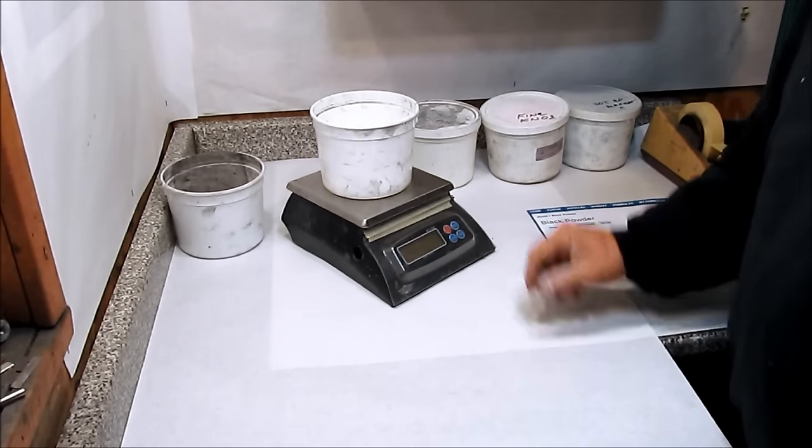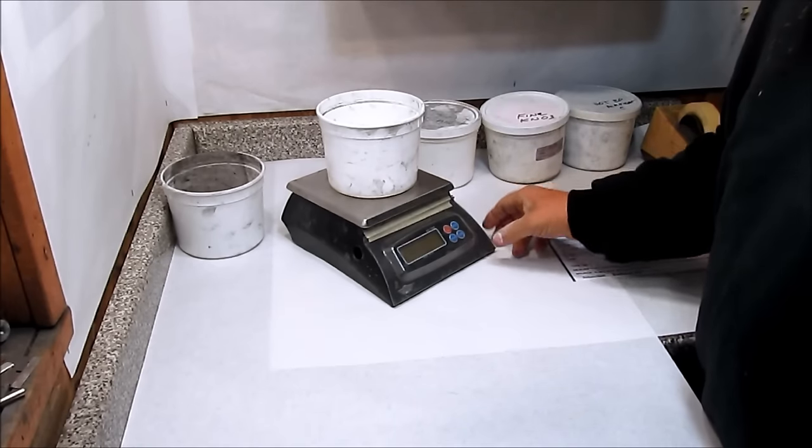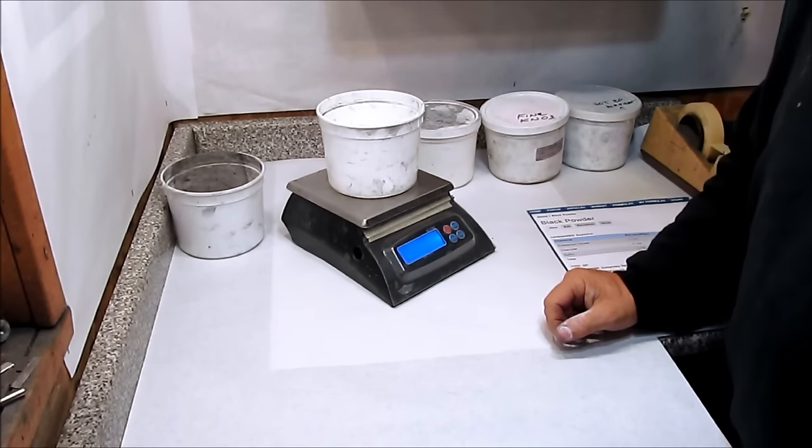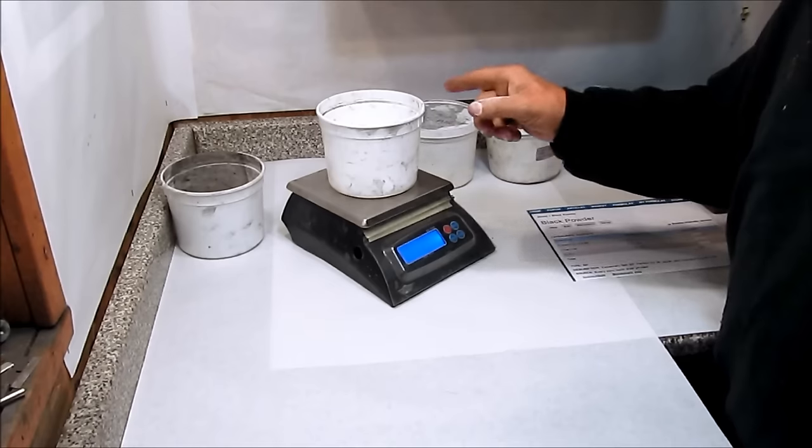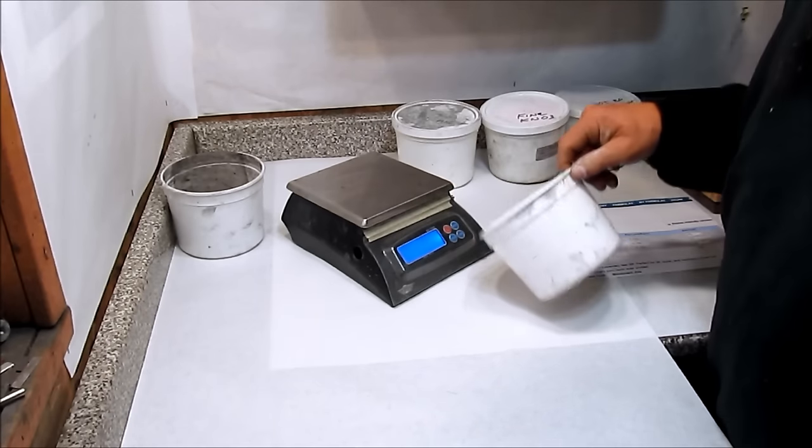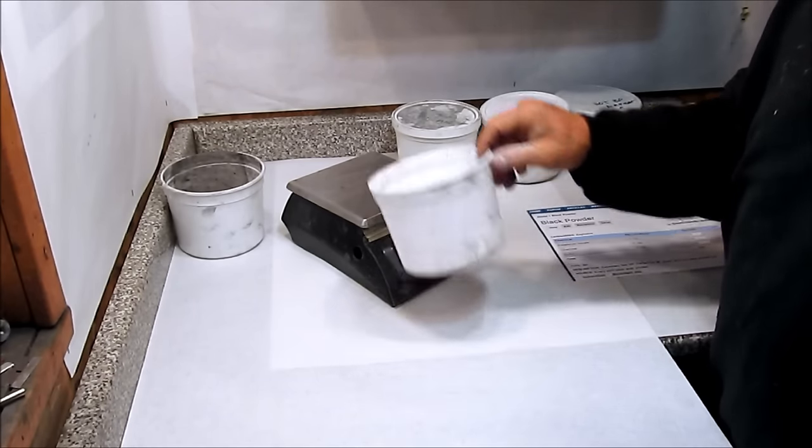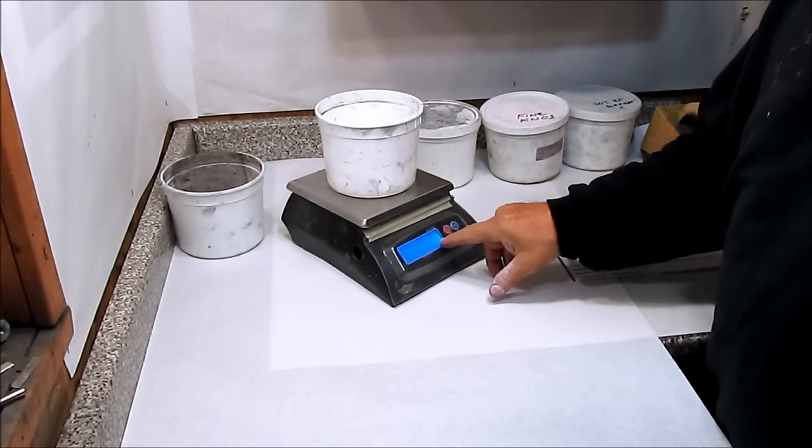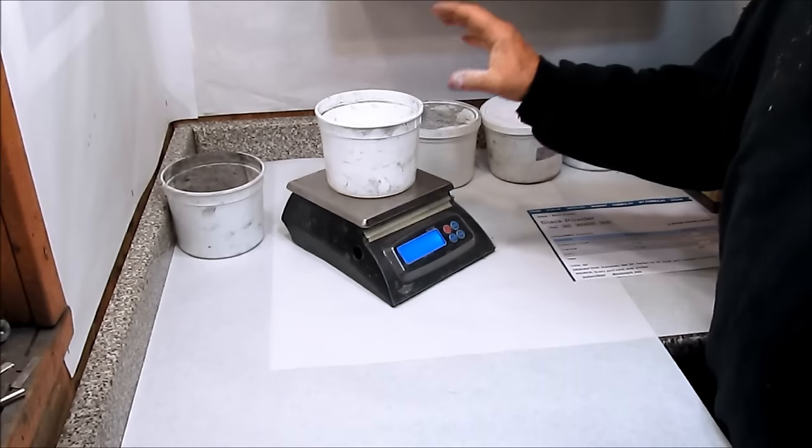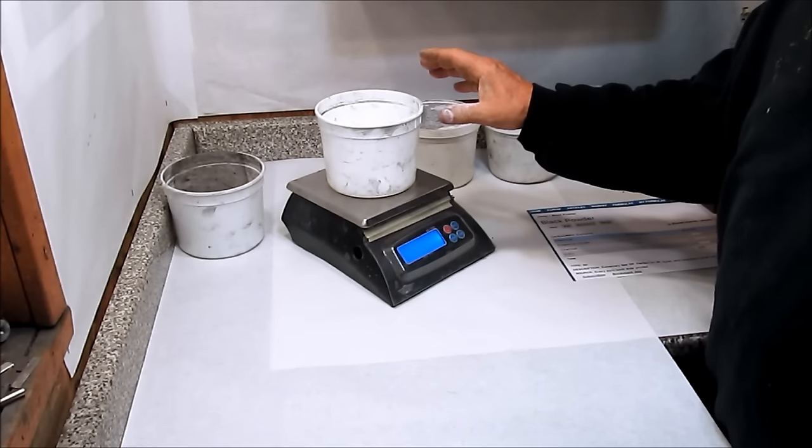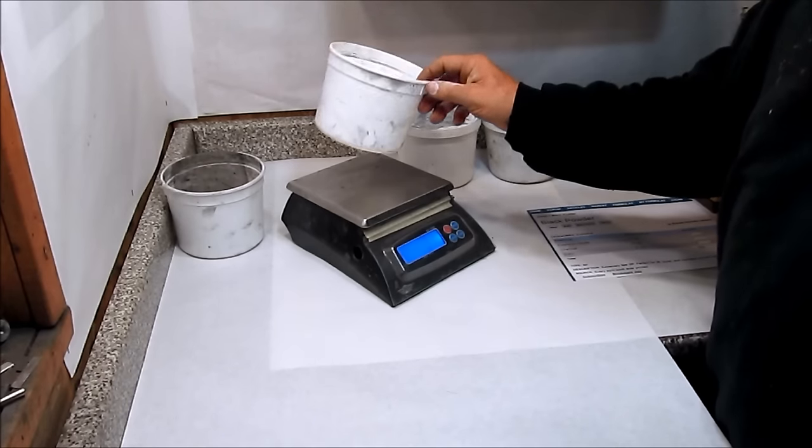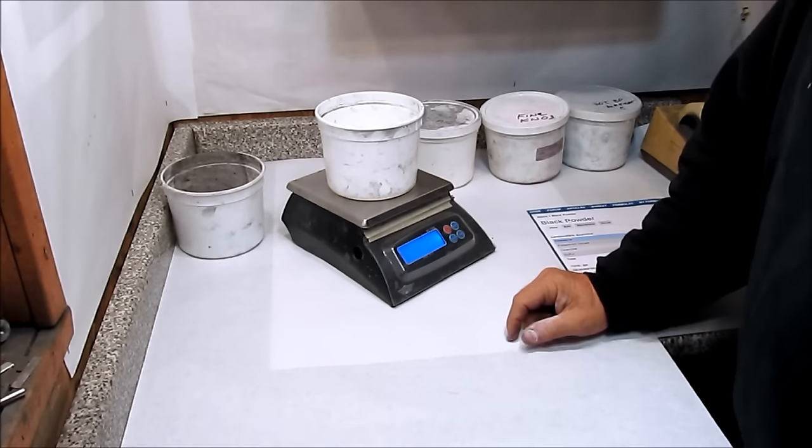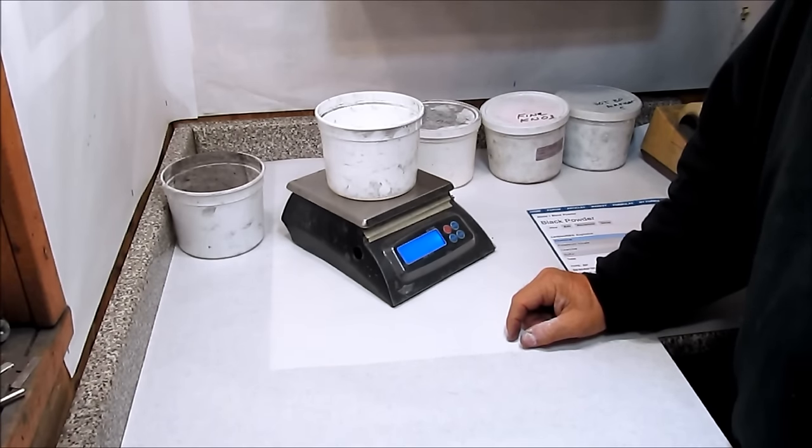The first step in weighing the composition is to tare, to turn on the scale, which automatically tares the scale to zero with the tub on there. If I remove the tub, it's showing minus 40 grams, so this tub weighs 40 grams. When the tub is on the scale though, it tares to zero grams. So I can weigh my chemical into that tub, and I'll know exactly what the chemical weighs. I don't have to subtract the weight of the tub.